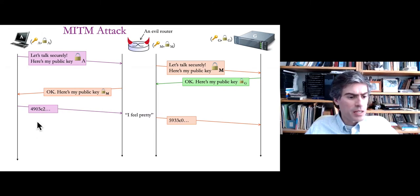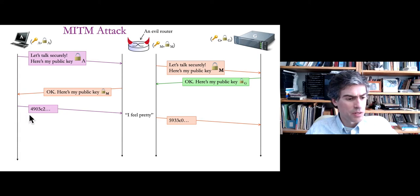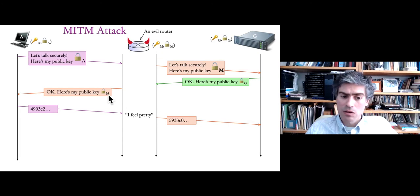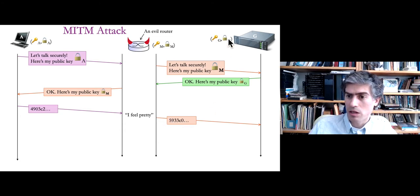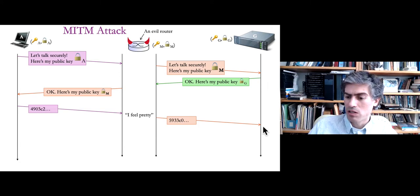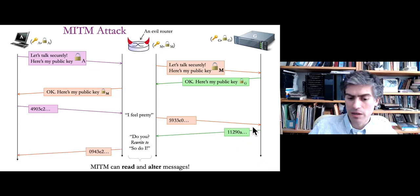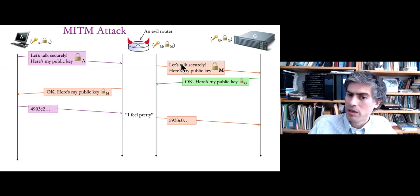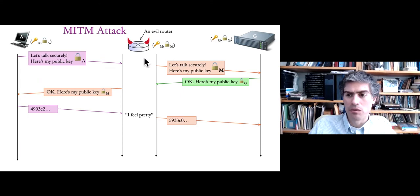After this exchange, A sends a message — 'I feel pretty' — encrypted using the received public key, producing an encrypted message. The evil router can decrypt it because it has the secret private key associated with public key M. Importantly, it can re-encrypt the message using public key G, which G told the man-in-the-middle in the green step. It rewrites and re-encrypts the message and delivers it to G, so G receives the message and can decrypt it and doesn't know anything bad happened — it doesn't know the message was re-encrypted and that someone in the middle read it.